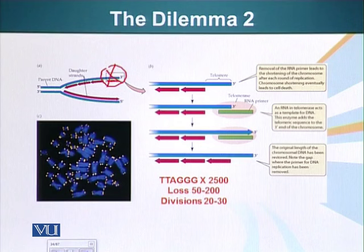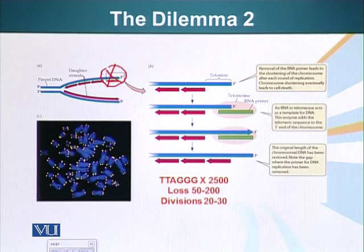It has been calculated that about 50 to 200 nucleotides will be lost every time the cell divides. With that, every time a cell divides, it can only divide 20 to 30 times before the DNA on the chromosome will become so short that the cell will not be able to support its normal functions.